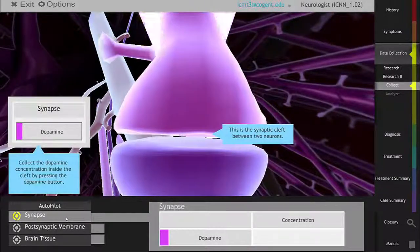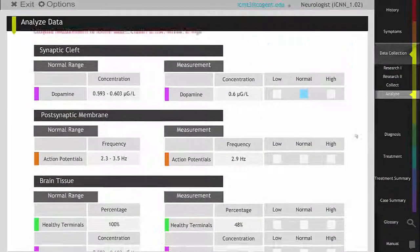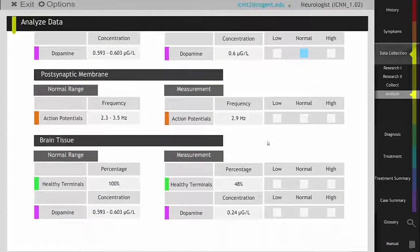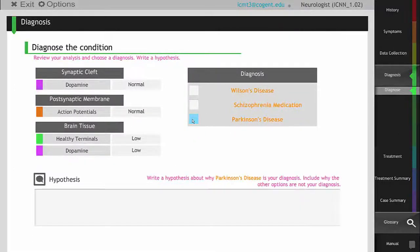Using data from the three major regions of a synapse, students can then determine how the production of dopamine has been affected. This allows them to determine Dennis' disease and construct a successful hypothesis.